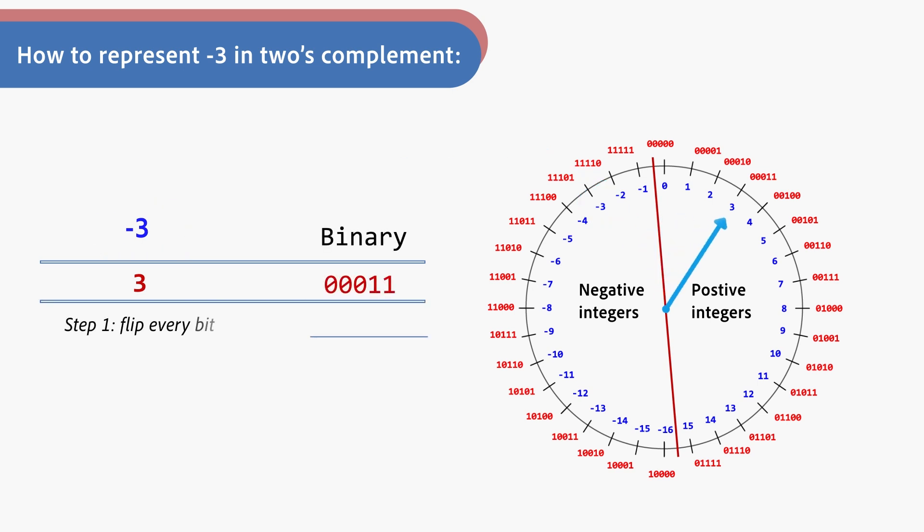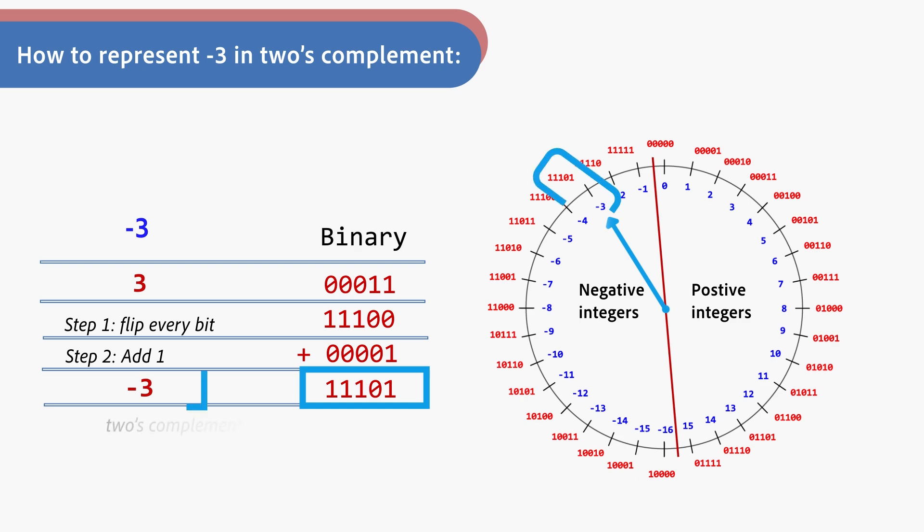In the first step, we flip every bit. In the second step, we add 1. The final result is 11101, which is the two's complement representation of negative 3.